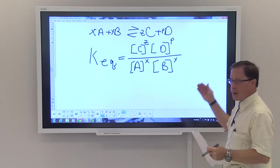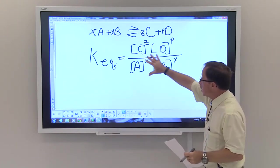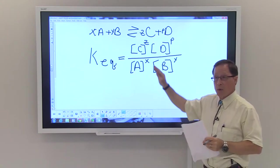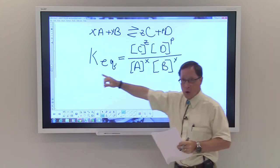If you had values for the concentration of A, B, C, and D, we could calculate what this constant would be.